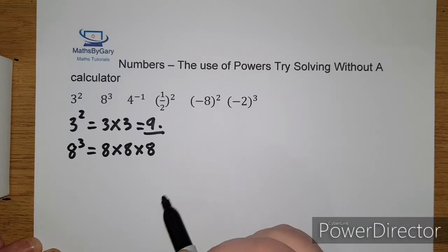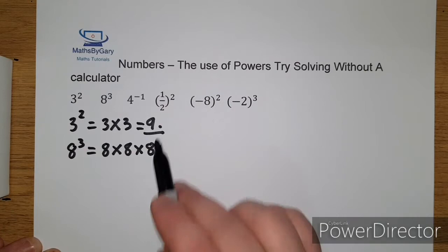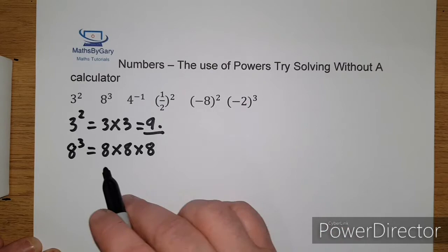So just a quick check: if it's 8 cubed that means it's 8 times 8 times 8, so there has to be 3 eights. We've got 1, 2, and 3. Just as 3 squared simply has 2 threes. So 3 times 3 equals 9. 8 cubed is 8 times 8 times 8.